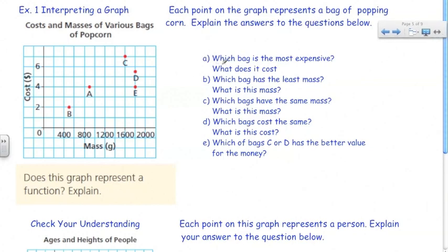A asks, which bag is the most expensive and what does it cost? Well, here we have cost and here we have mass. Remember that mass is going to be the independent variable or the domain. Cost will be the dependent variable or the range and that makes sense because the cost of the popcorn is going to depend on the mass of the bag or how big the bag is.